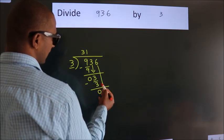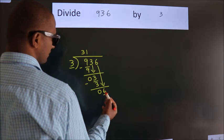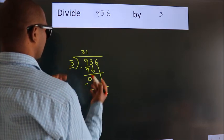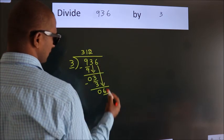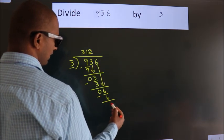After this, bring down the beside number. So 6 down. When do we get 6? In the 3 table, 3 twos are 6. Now we subtract. We get 0.